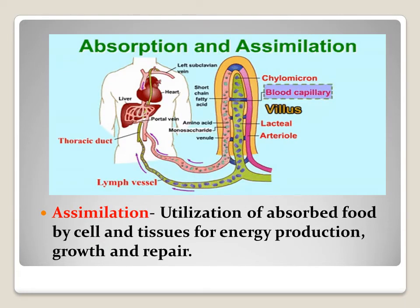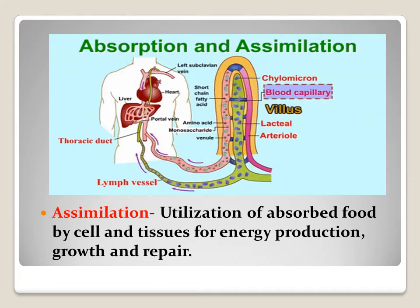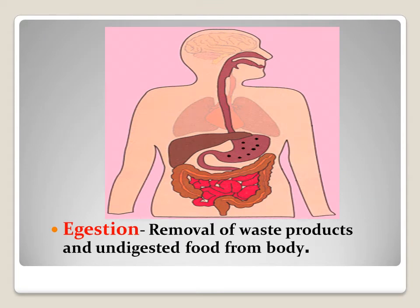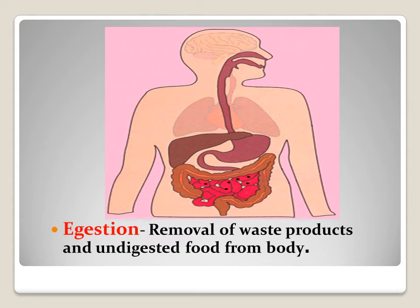The fourth step is assimilation: utilization of absorbed food by cells and tissues for energy production, growth, and repair. The last step is egestion: removal of waste products and undigested food from the body. So these five steps occur in nutrition in animals — ingestion, digestion, absorption, assimilation, and egestion.